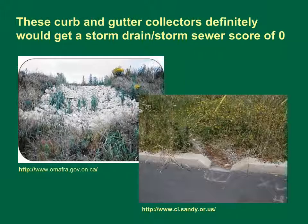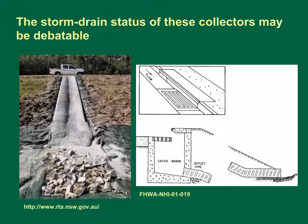These curb and gutter collectors would definitely get a storm drain/storm sewer score of zero. Pictures show curb and gutter collectors with riprap and vegetated linings; in these cases, these collectors would clearly not be classified as storm drains or storm sewers. The storm drain status of some collectors may be debatable — for example, an open channel with concrete lining, or a collector with a catch basin and drainage pipe emptying to the toe of the slope. It is debatable whether these qualify as storm drains because they do not empty into other sewers or the receiving stream.